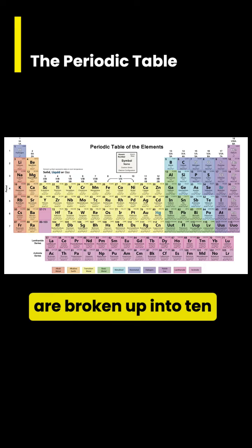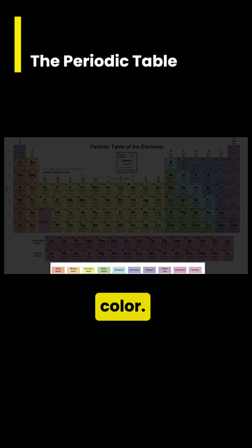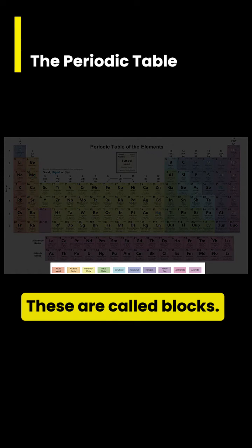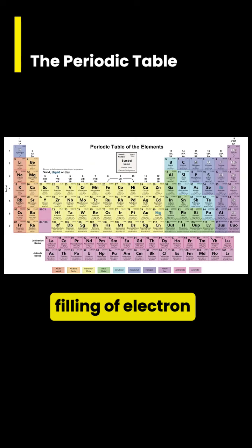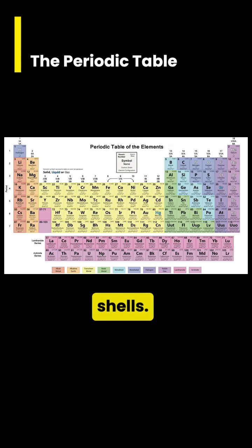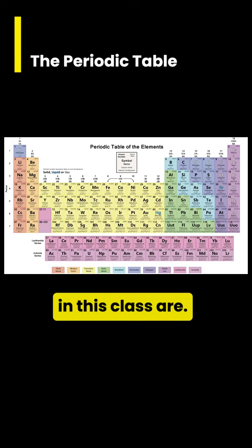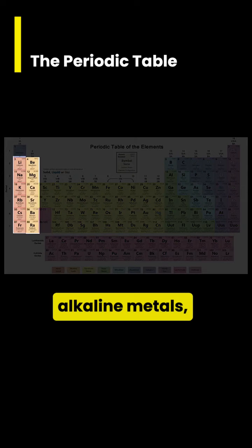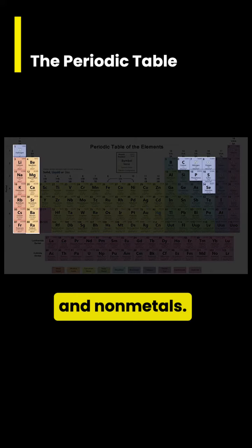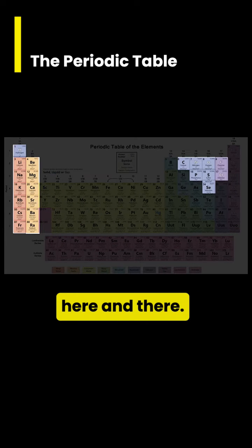Notice that the elements are broken up into 10 categories, each given a different color. These are called blocks and have to do with the filling of electron shells. The blocks most relevant in this class are alkali metals, alkaline metals, and non-metals, with a few exceptions here and there.